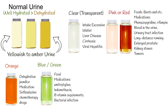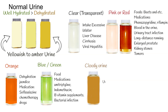Dark brown urine. In most cases, urine that's dark brown indicates dehydration. Some foods can also cause dark brown urine — for example, aloe or fava beans. Intense physical activity, especially running, can cause dark brown urine, known as exertional hematuria. It will typically resolve with some rest within a few hours.